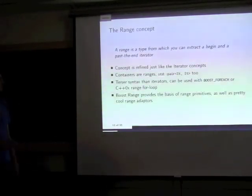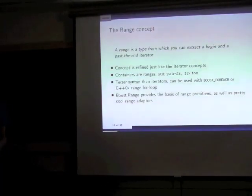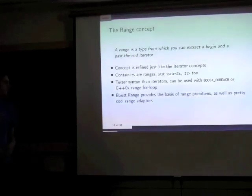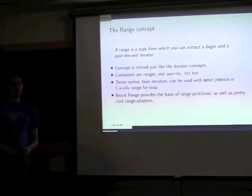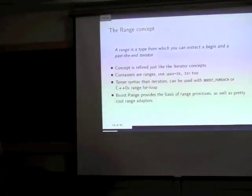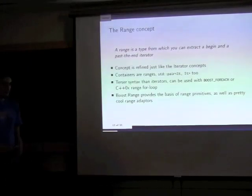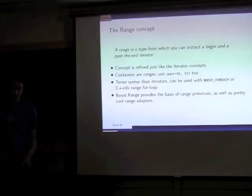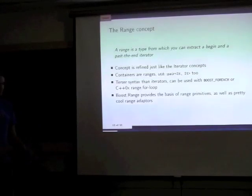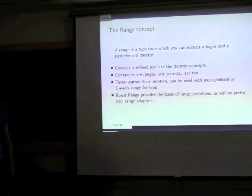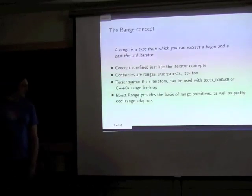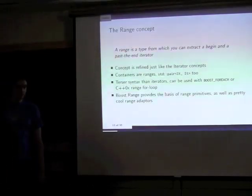A range is basically any type from which you can extract a begin and end iterator. Like iterators, it can be refined — you have a hierarchy of concepts. Containers are ranges, pairs are ranges. There's also an iterator range class which is a glorified pair — more practical than raw iterators because you only have one object and don't have to pass begin and end separately. Boost.Range provides most of the tools you need to deal with ranges.